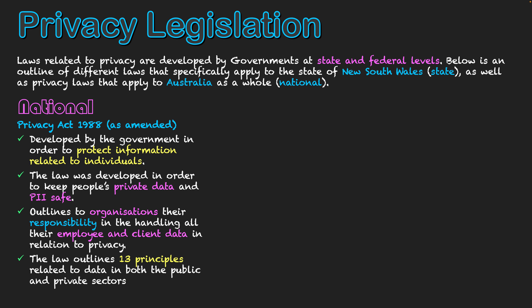The law outlines 13 specific principles related to both the public and private sectors. In a future video, I'll go over what those principles are. That law applies to all of Australia — it is at a national level: the Privacy Act 1988.